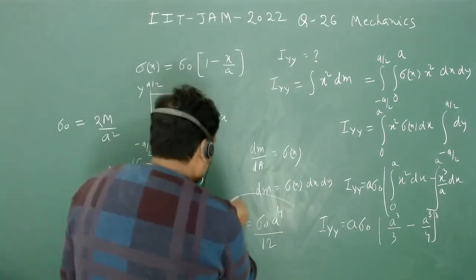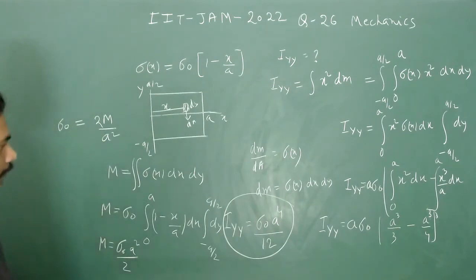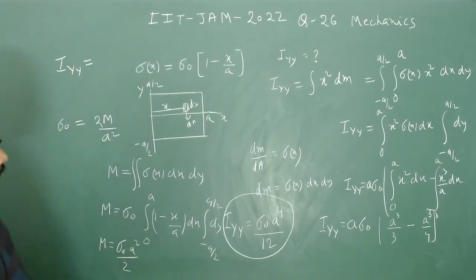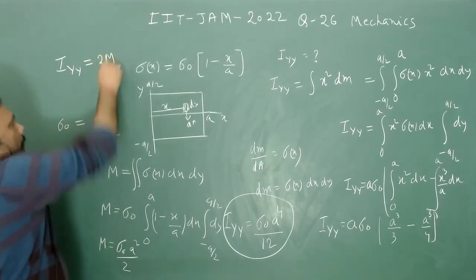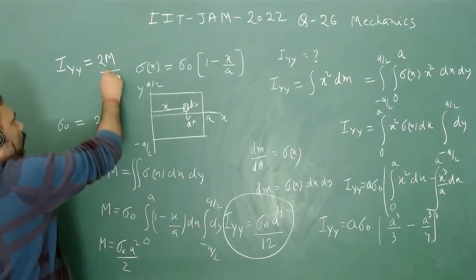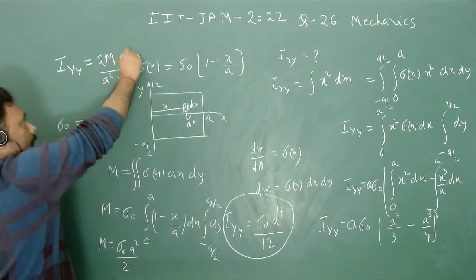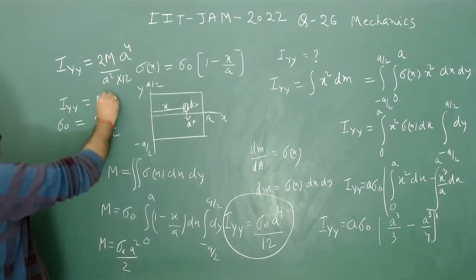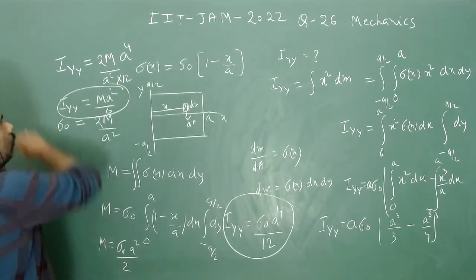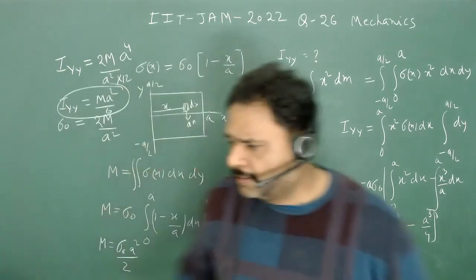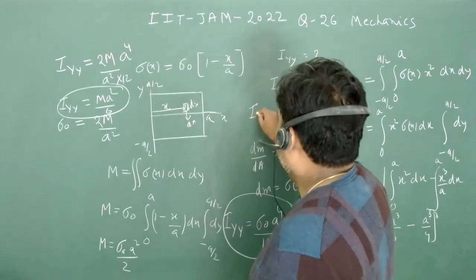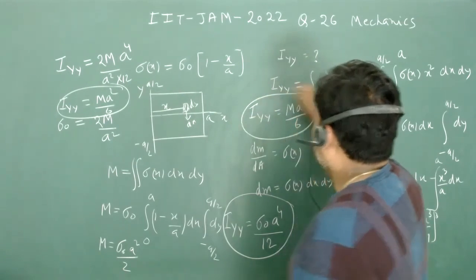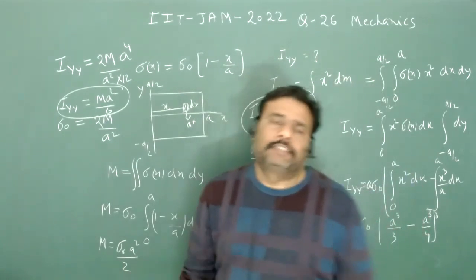Substituting σ₀ = 2M/a² into the expression for I_yy: I_yy = (2M/a²)·(a⁴/12) = 2M·a²/12 = Ma²/6. So the final answer is I_yy = Ma²/6.